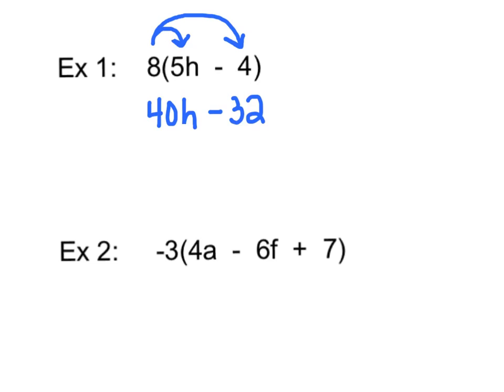For example 2, this time I'm going to distribute the negative 3 all the way through, and in the parentheses there are 3 terms. That means I need to multiply 3 times. I'm going to draw my arrow. Negative 3 times 4A is going to give me negative 12A. Now sometimes those minus signs confuse me.